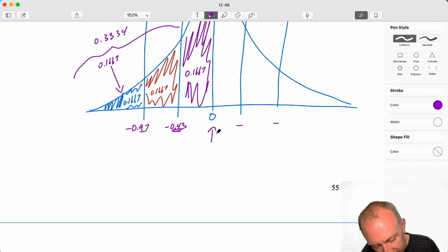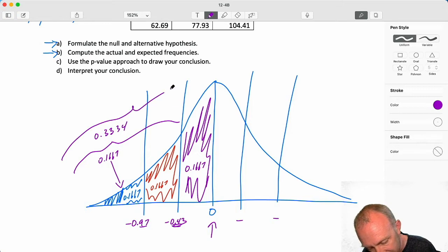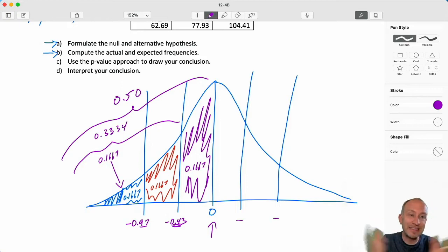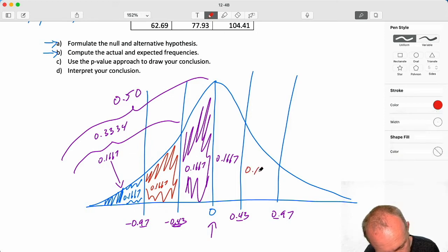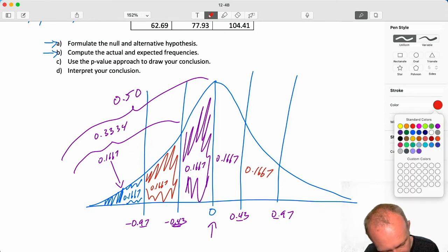Negative 0.43. Next one is zero. That corresponds to an area, of course, this whole area here is equal to 0.5. And then, because this distribution is perfectly symmetric, I know this next one is going to be positive 0.43 and positive 0.97. And that's going to give me, again, all of those same probabilities in each of those intervals.